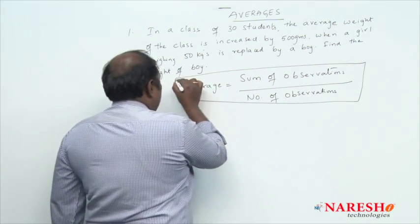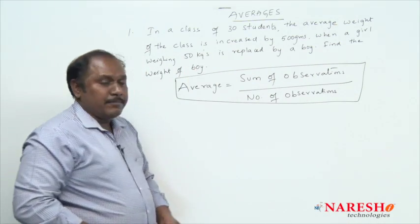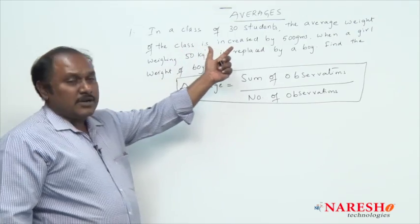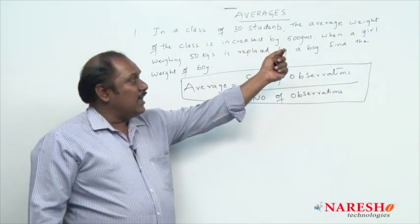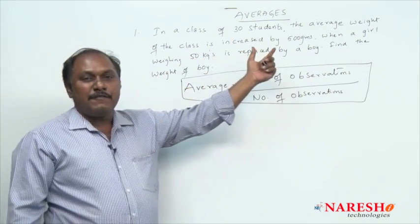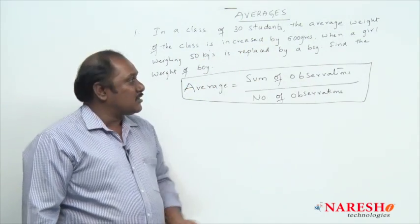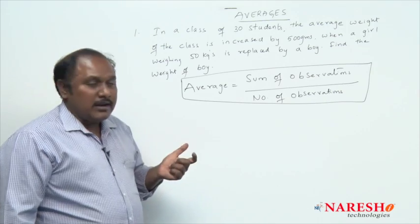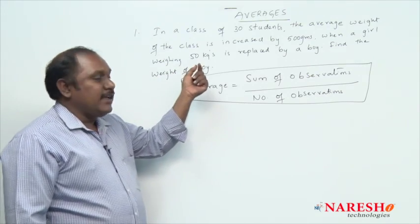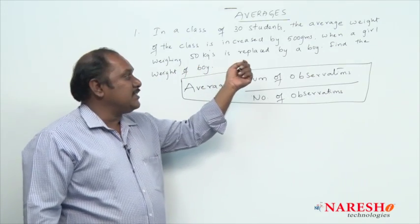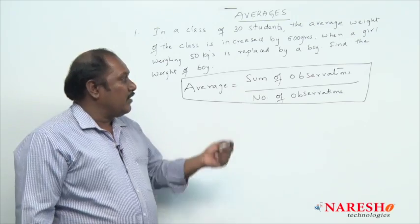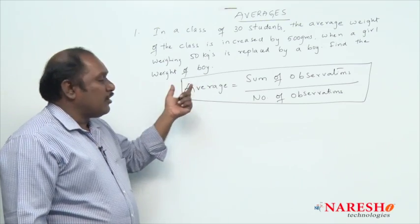Now let us start with a simple problem. In a class of 30 students, the average weight of the class is increased by 500 grams when a girl weighing 50 kg is replaced by a boy. Find the weight of the boy.